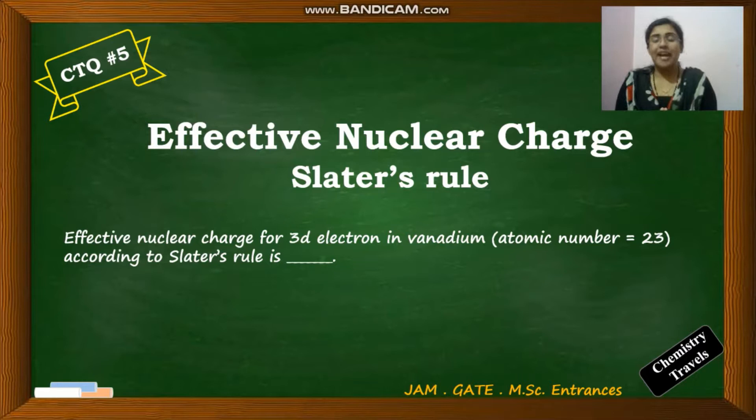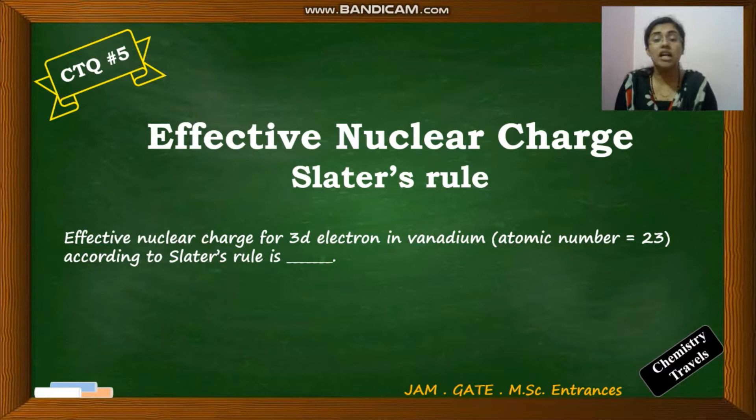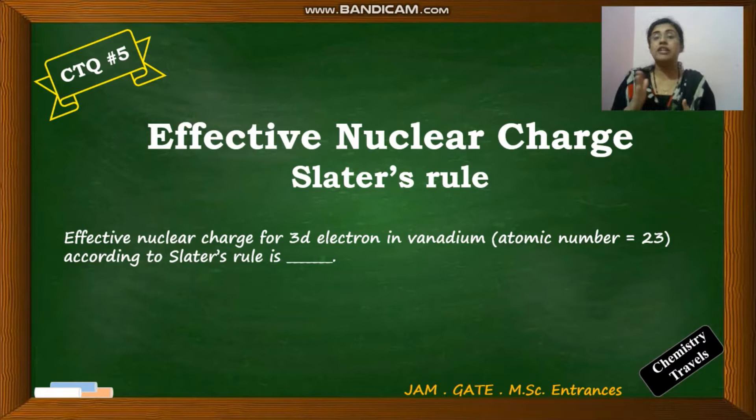Hello everyone, welcome to Chemistry Travels. Today we have the fifth question of the Concept Through Question series. The question is from JAM 2016: what is the effective nuclear charge for the 3d electron in vanadium with atomic number 23, according to Slater's rule? To solve this, we need to learn the concept of effective nuclear charge.